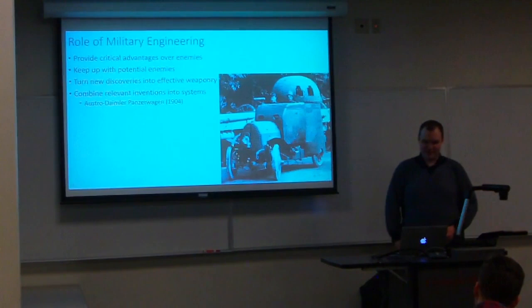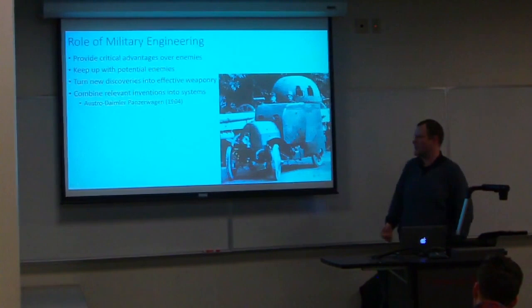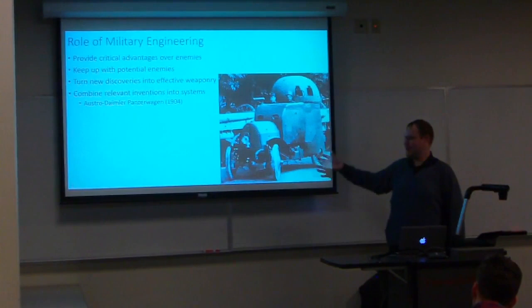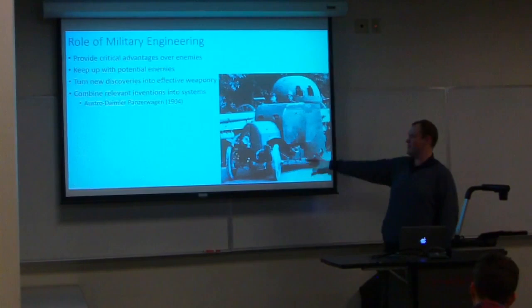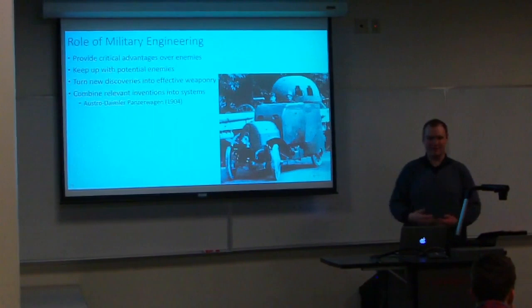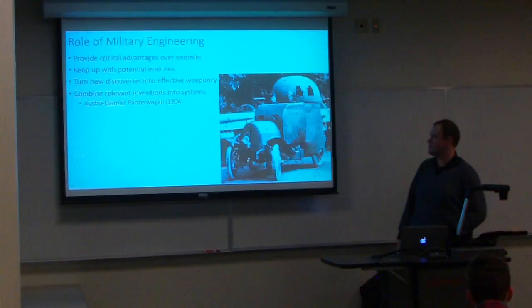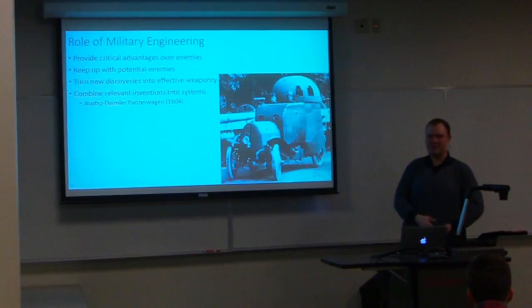Another important role, especially in recent history, is to combine relevant inventions into combat systems. This is the Austro-Daimler Panzerwagen, a 1904 armored car — one of the first and the first fully enclosed armored car ever built. It combined the automobile, invented just 20 years prior, with the machine gun, also invented roughly 20 years prior, together with new steel armor alloys being developed at the time to make ship armor lighter and more agile. There were many individual inventions that came together over 20 years — and ultimately all the way back to the dawn of time — to make the Panzerwagen a reality in 1904.